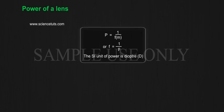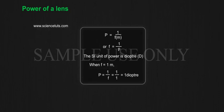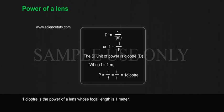The SI unit of power is diopter (D). When F equals 1 meter, P equals 1 by F equals 1 by 1 equals 1 diopter. 1 diopter is the power of a lens whose focal length is 1 meter.